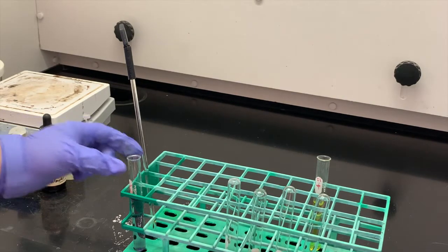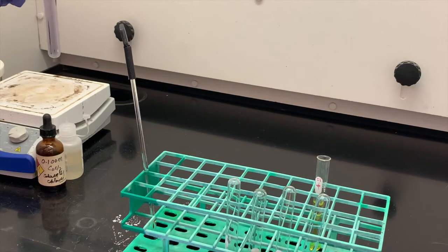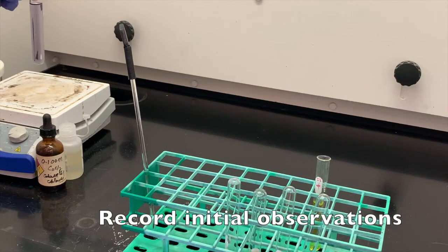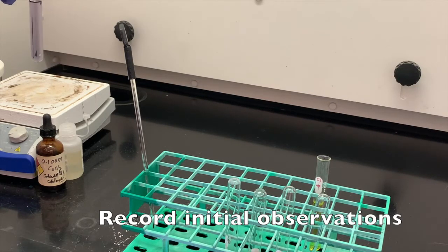So the next one for table one is we're going to add water to this. So this should be your initial observation of what it looks like. And then we're going to add water dropwise until we see a color change.